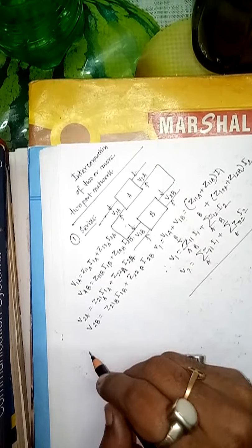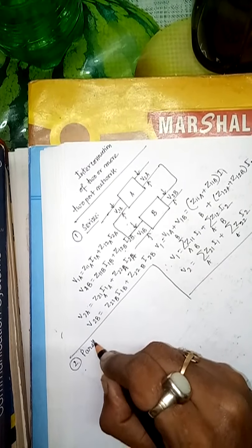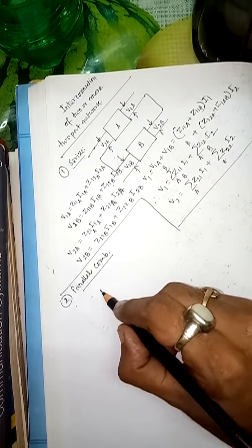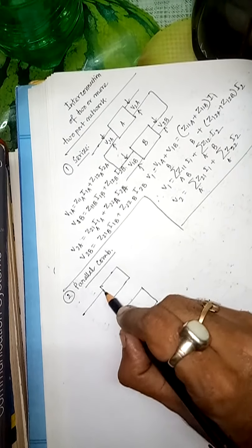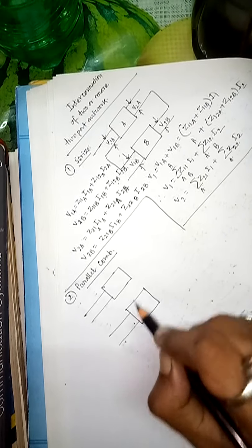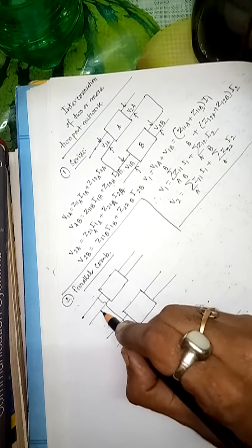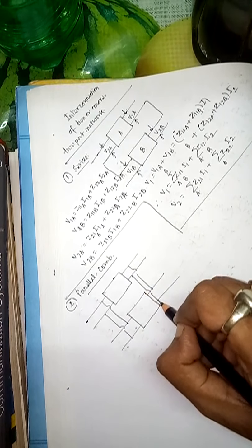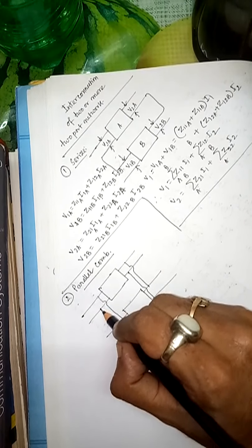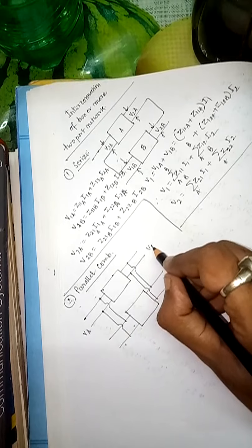The second part is number two — that is the parallel combination. In that parallel combination, you have two networks: number one and number two. Their ports — since they are two-port networks — the first port of one is joined with the first port of the other, and the second port of one is joined with the second port of the other.